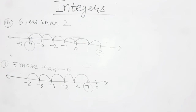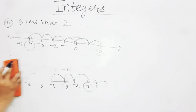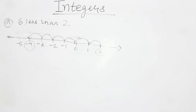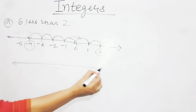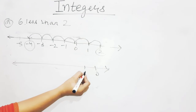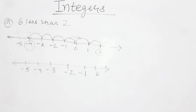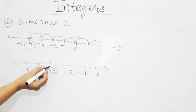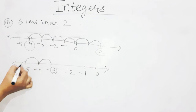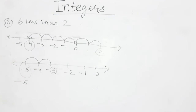The fourth option is 2 less than minus 3. Draw the number line including minus 3. From minus 3 we go 2 steps to the left hand side: 1 step to minus 4, 2 steps to minus 5. So the answer is minus 5. This is how we represent these integers on the number line.